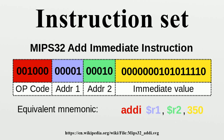The OpenGL virtual instruction set and virtual assembly language, and CUDA, are examples of hardware abstraction layers on top of the specialized processor native instruction set. On traditional architectures, an instruction includes an opcode that specifies the operation to perform, such as add contents of memory to register, and zero or more operand specifiers, which may specify registers, memory locations, or literal data. In very long instruction word architectures, multiple simultaneous opcodes and operands are specified in a single instruction. Some exotic instruction sets do not have an opcode field, only operands.